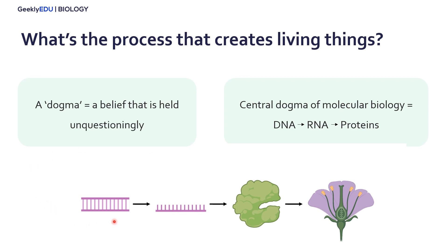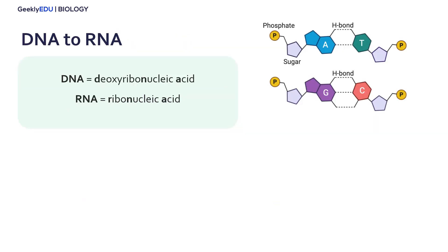So we have DNA, which is then turned into RNA, which then creates proteins. And then those proteins will create the color pigment in a flower, or will create the stem, or will create all of the different characteristics that we get within a living organism.